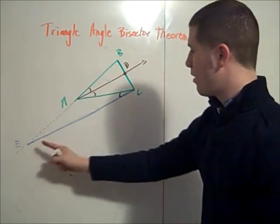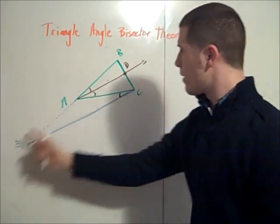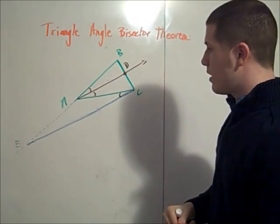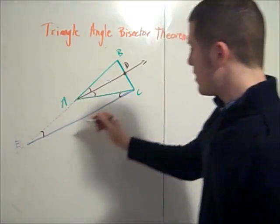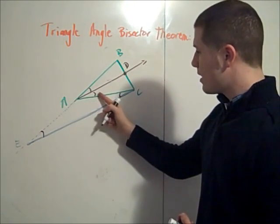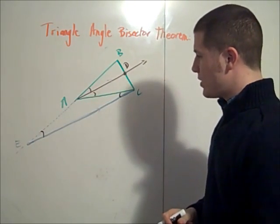Moreover, consider those two parallel lines again, cut by the transversal BE. Then we see that angle AEC is congruent to angle DAC because of the corresponding angle postulate.